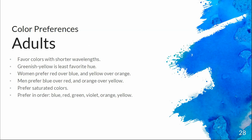Adults tend to favor shorter wavelengths — more blues and things like that. That's been shown to be true via fashion: blue is the color that everybody wants, the most common color used for things like jeans. Greenish-yellow is going to be a least favorite hue for adults, maybe because we associate those types of colors with sickness.